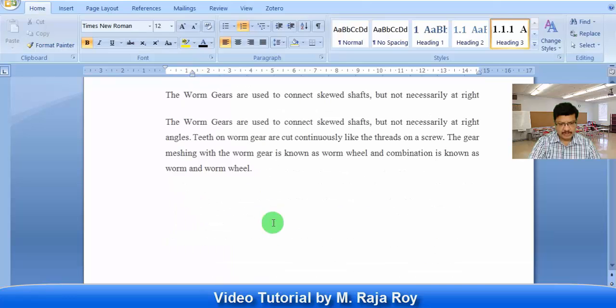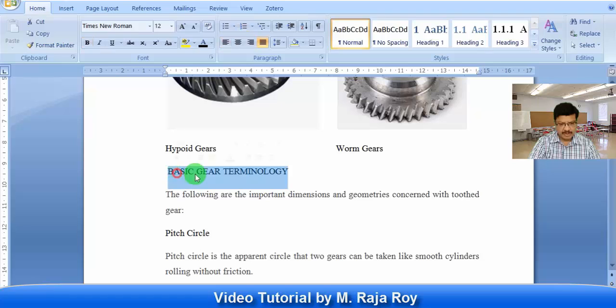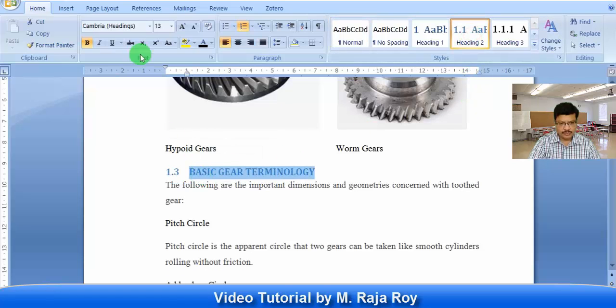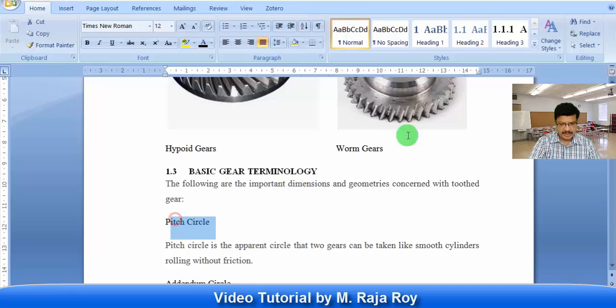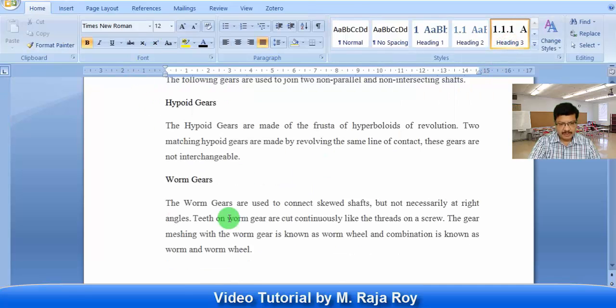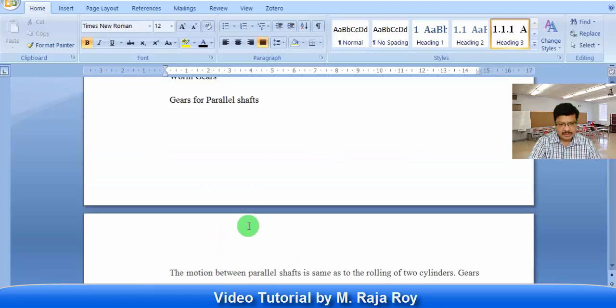Suppose all these are our next two, we have to go for some basic gate terminology. This is heading two. So in this, this is the subheading. Then this is heading three. In this way you can give automatic numbering for all these paragraphs.